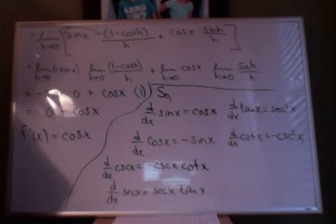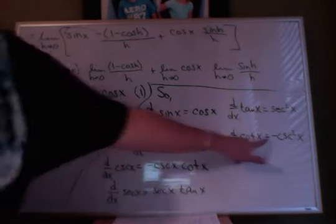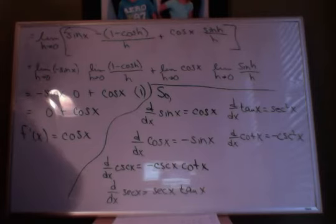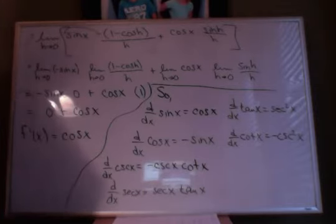Derivatives of co-functions are all negative. You substitute the functions for the co-functions as implied.